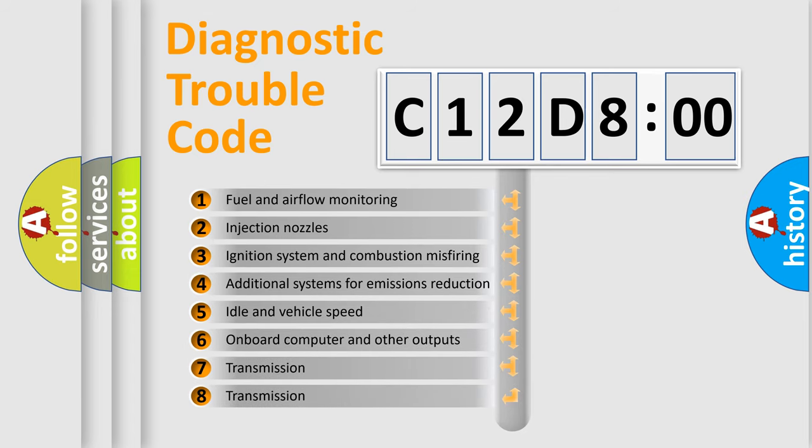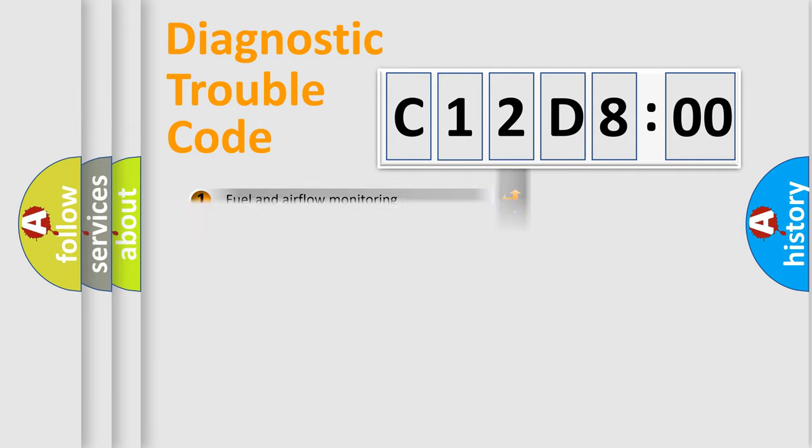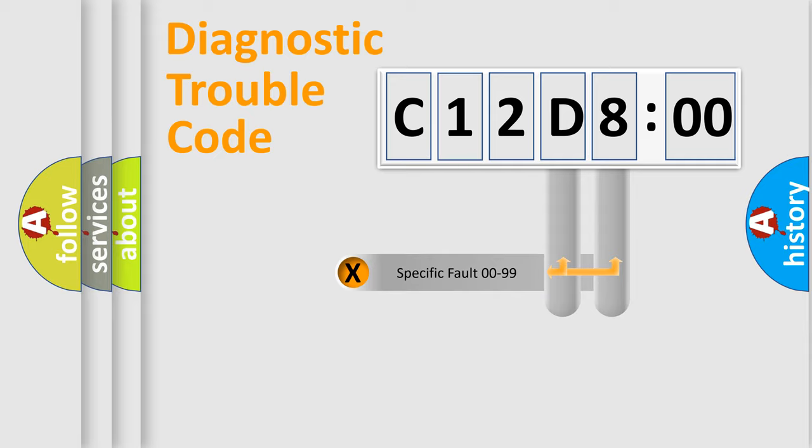The third character specifies a subset of errors. The distribution shown is valid only for the standardized DTC code. Only the last two characters define the specific fault of the group.